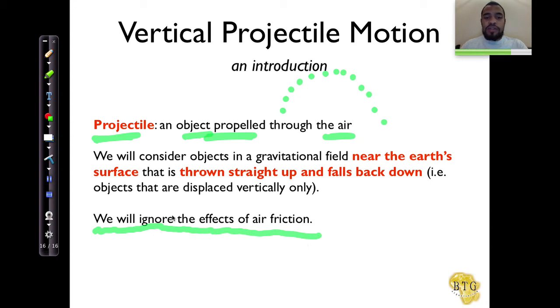In other words, we will look at it in the absence of air friction, one. And two, we will also only consider objects near the Earth's surface that go directly up and come directly down in the same straight line.